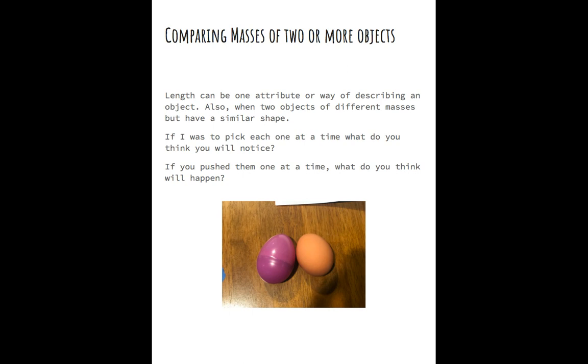Also when two objects have different masses but similar shapes, for example down below I have a picture of two eggs. They have the same shape. However there are two different things about the masses. One is a plastic egg and one is just a regular egg.